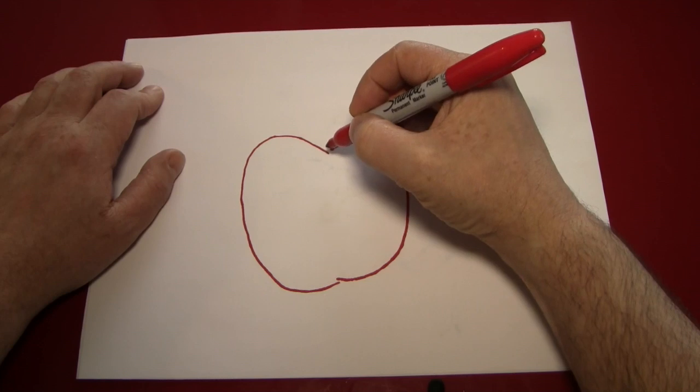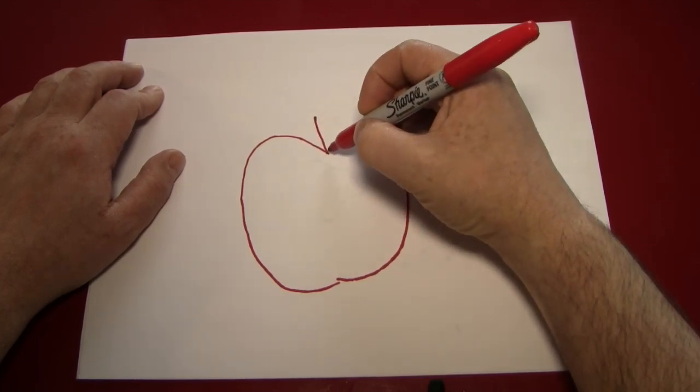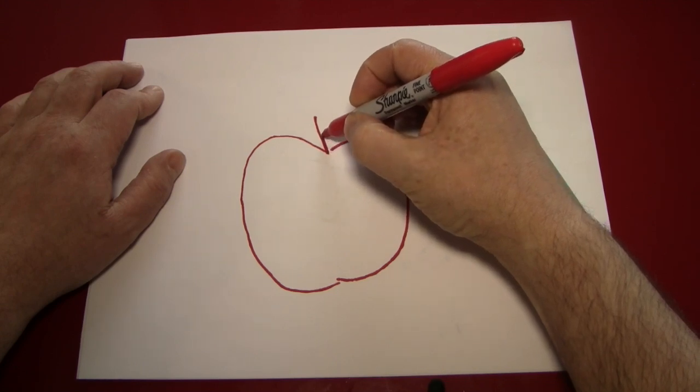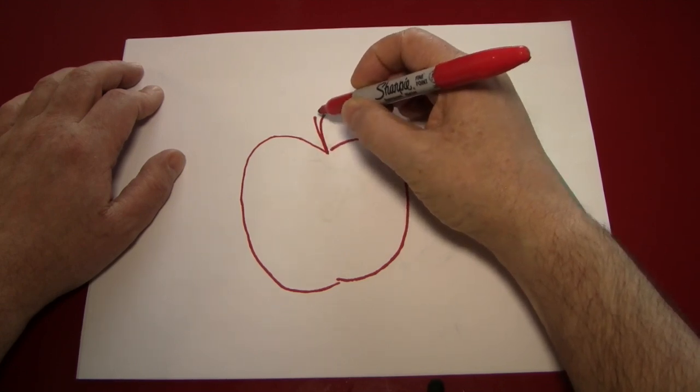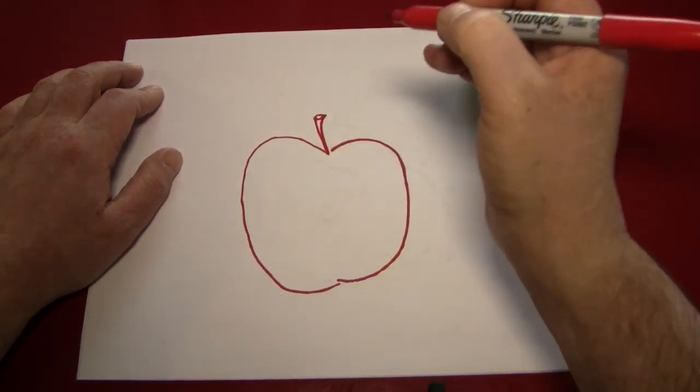Next, we're going to put a little stem on the top of the apple. Just make it get skinny, and get a little fat at the end, like that. You can even put a little circle on top for dimension.